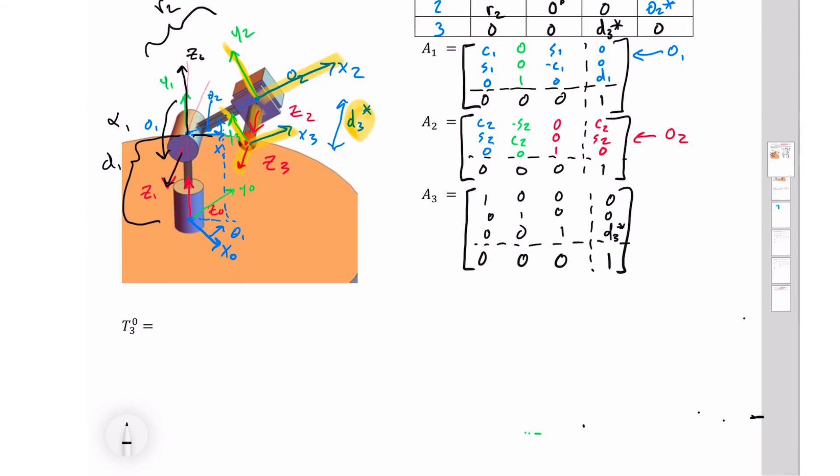And those are our transformation matrices. We take those and we multiply them together. I'm going to leave that as an exercise to you, and I'm just going to show you the answer, because this is the answer we want to talk about. So the first thing I do is I put in my easy values, because we always are going to have some easy values.